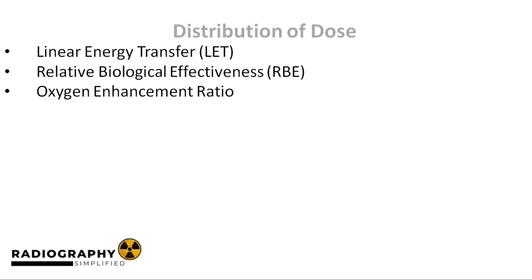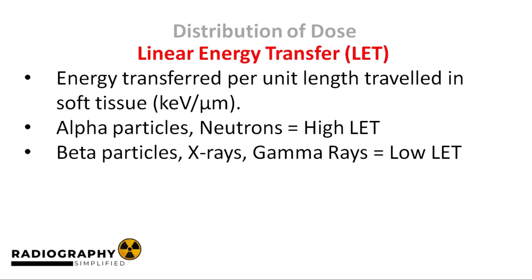Three key terms that are associated with the distribution of dose include linear energy transfer, relative biological effectiveness, and oxygen enhancement ratio. First, we talk about linear energy transfer. Simply put, it is the amount of energy transmitted in a medium such as soft tissue per unit length traveled in said medium. It is measured in kilo electron volts per micrometer.